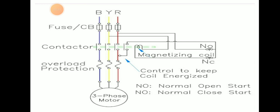This is a simple condition of a direct online starter. Here we can see three phases — red, yellow, and blue. There are a few circuit breakers provided, and after that there is a contactor.